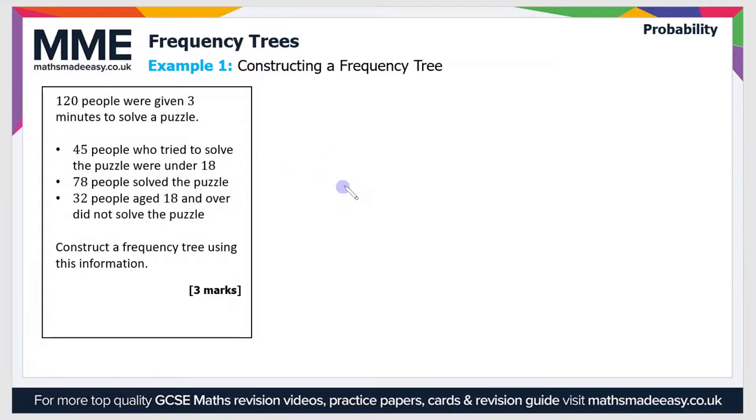These will be the first two branches of the frequency tree, and those are people who are under 18 and people who are aged 18 and over. So let's add labels to our branches. That's under 18, and then it's 18 and over.